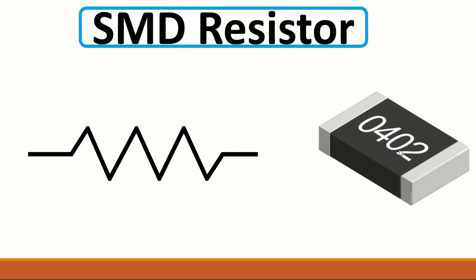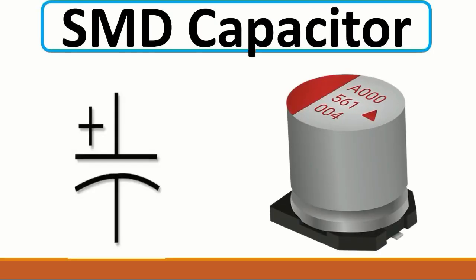Let's see the second component — the SMD capacitor. This kind of capacitor is polarized. As you can see, we have here plus and minus: this is the negative terminal and over here we have the positive terminal. This kind of capacitor is used for filtering purposes in order to filter the current and get a pure voltage. You will find this kind of capacitor everywhere in the motherboard, in every circuit.